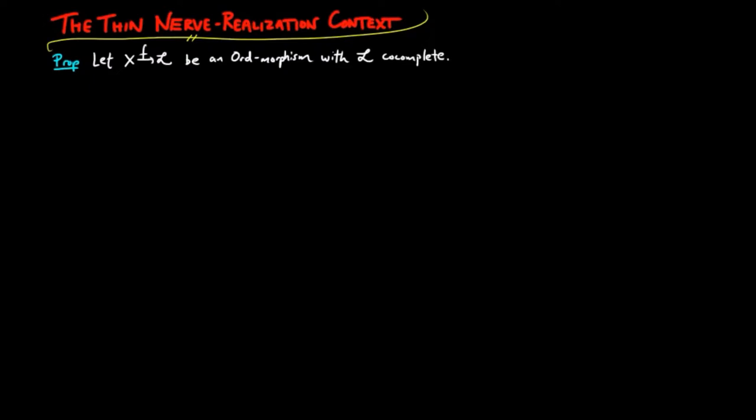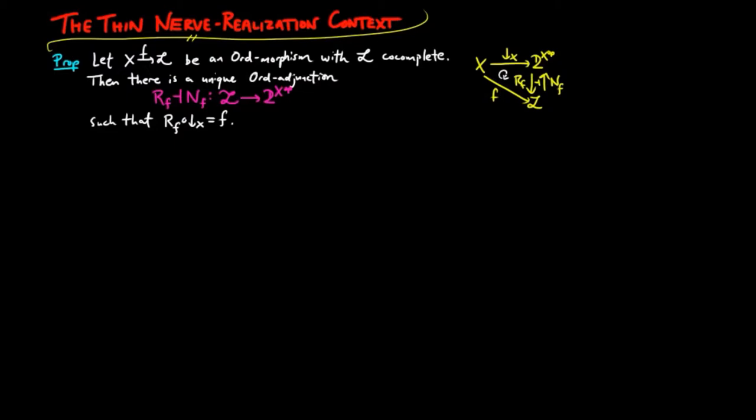Such a morphism will be called an NR context. Then there is a unique order adjunction Rf, Nf from L to the downsets of x such that Rf lower segment x is equal to f. Recall that the functor lower segment x is the thin Yoneda morphism.